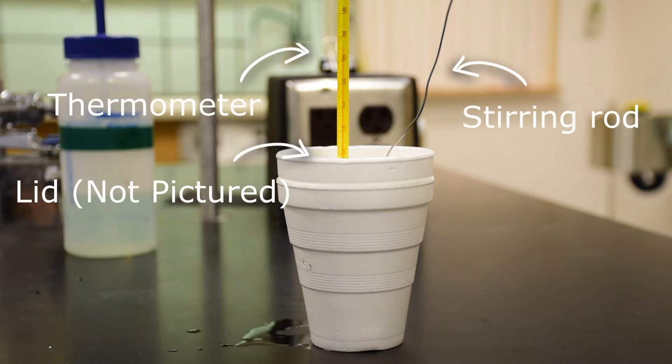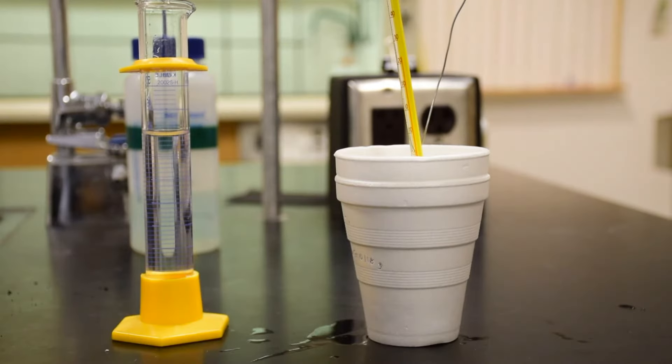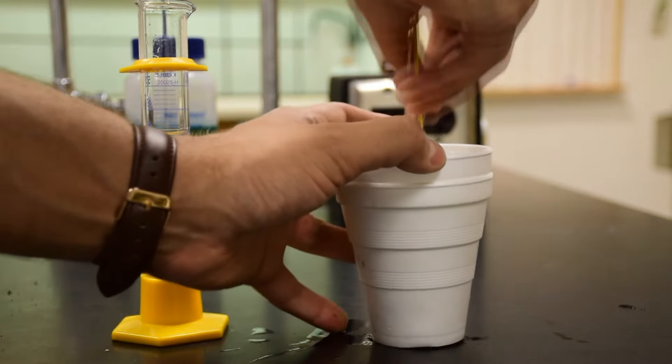Set up the coffee cup calorimeter as shown. Using a graduated cylinder, add distilled water to the coffee cup calorimeter. It is up to you to determine how much water to use.